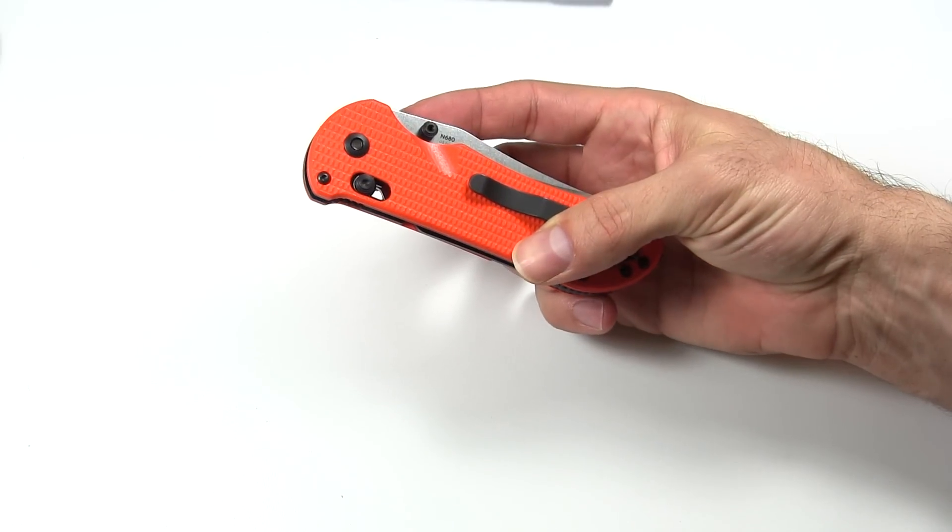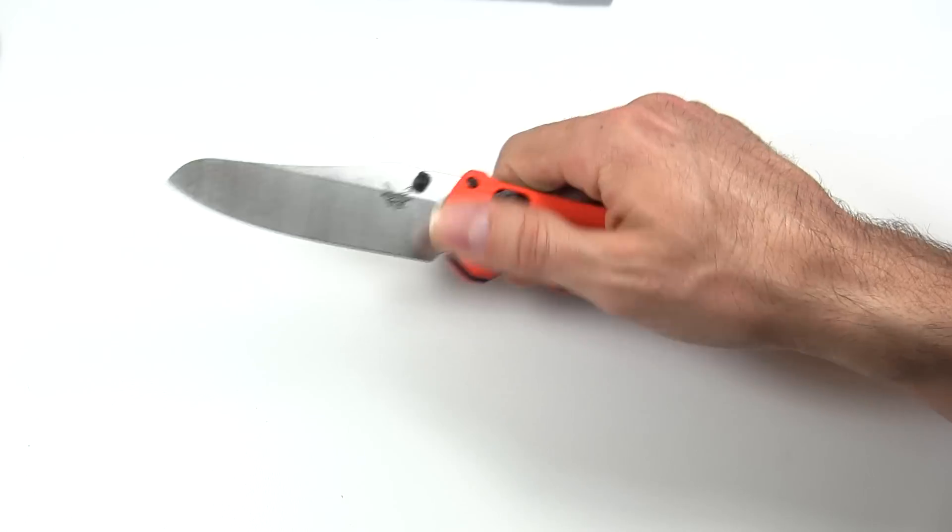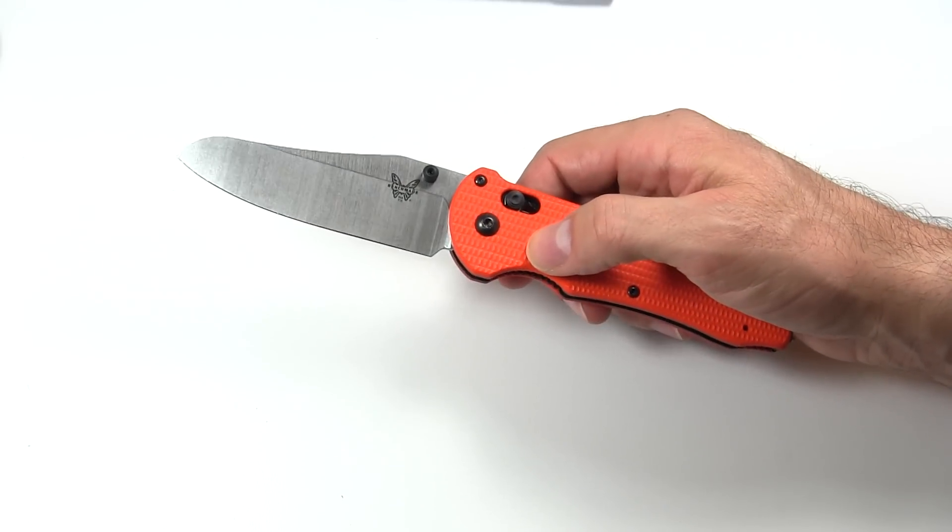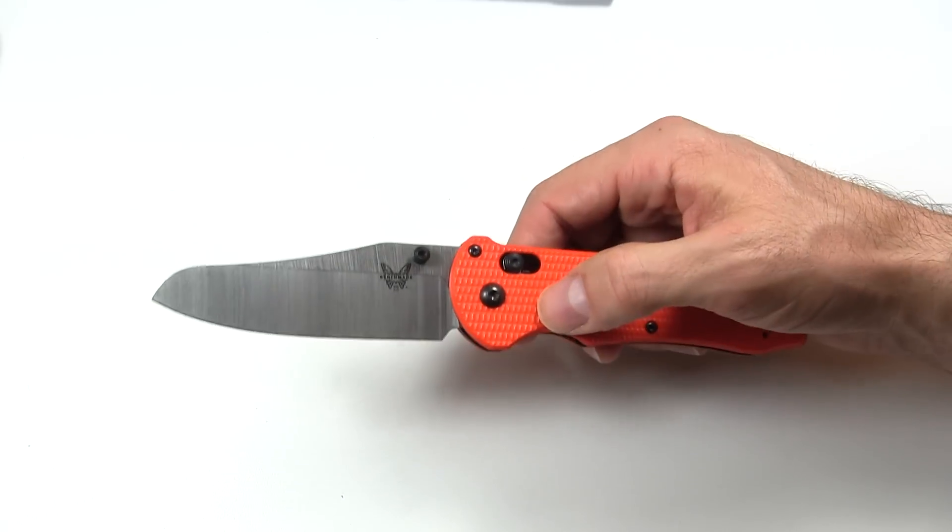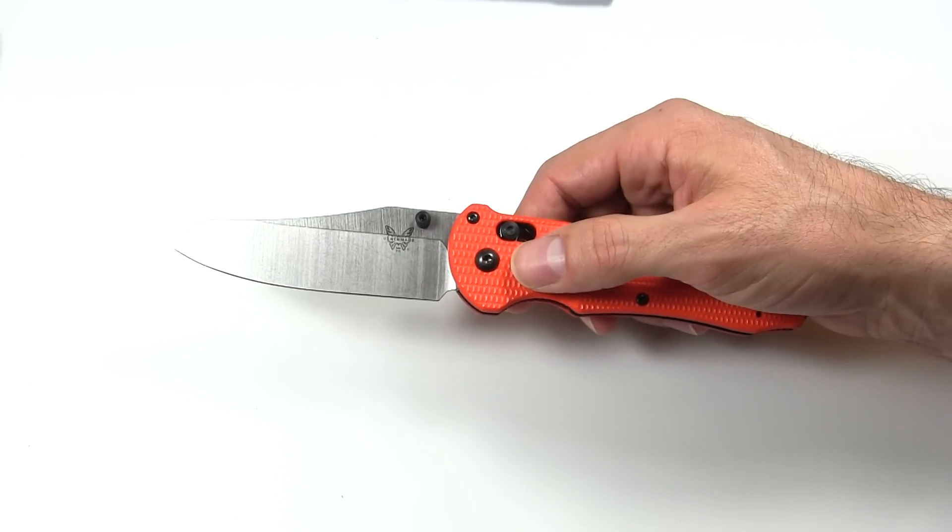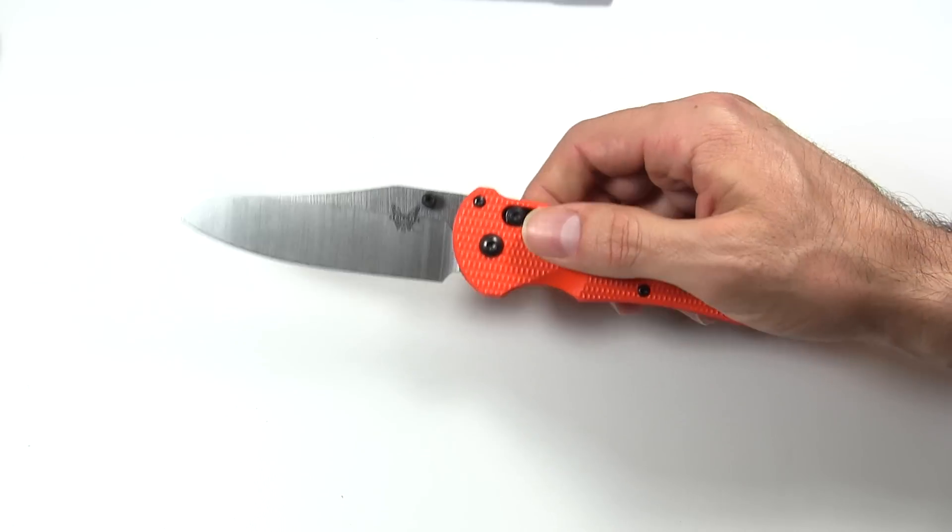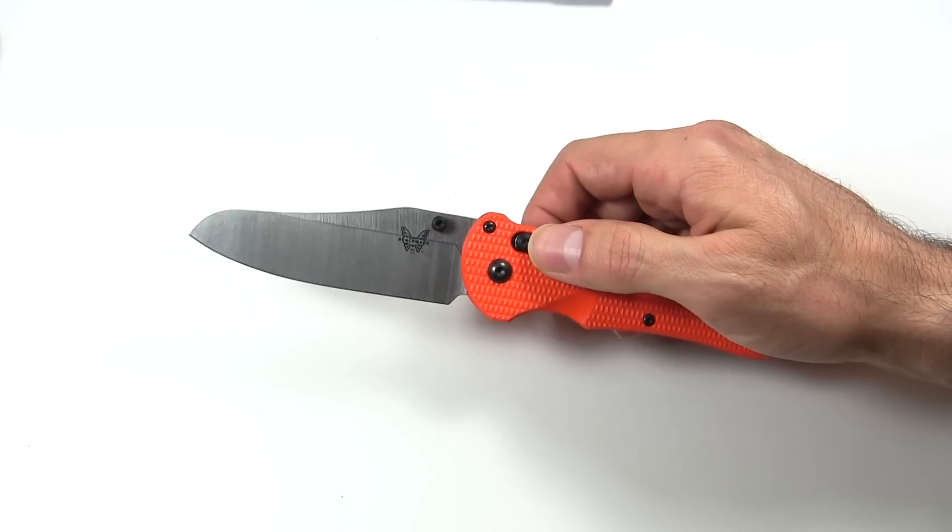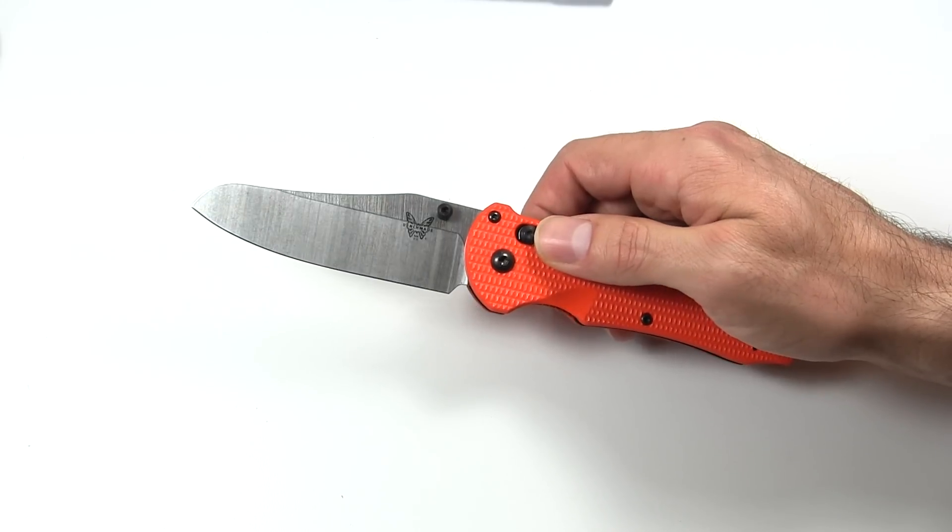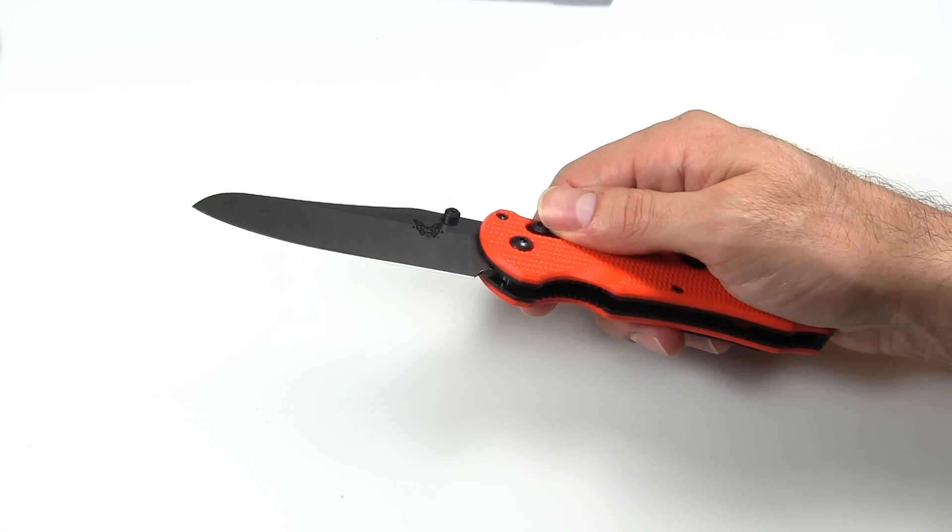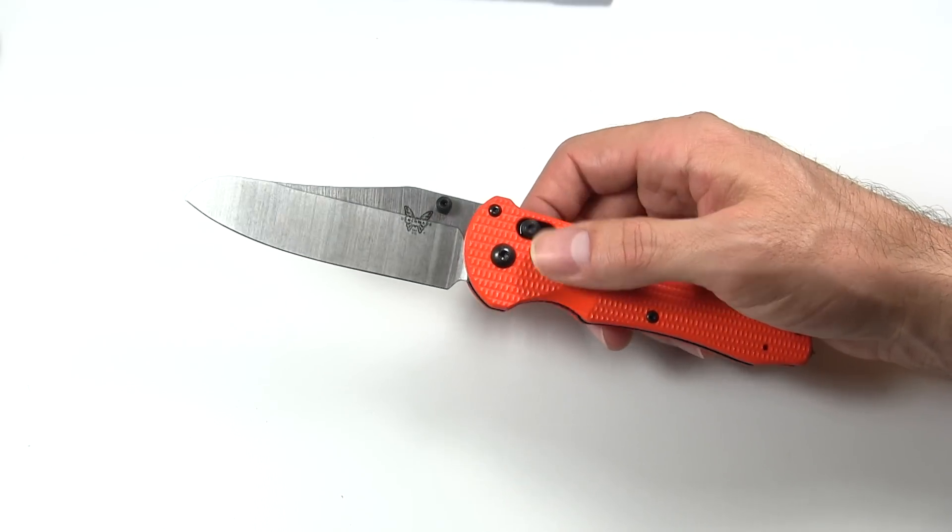Now moving on to the steel. How about the blade? Blade first. It is N680 steel. It's an Austrian steel, from what I understand. It's very corrosion-resistant. It does pretty well for sharpening. It does pretty well for holding a point. As it says on the Benchmade website, it helps maintain its keenness. So there you go. I think that means that it stays sharp.